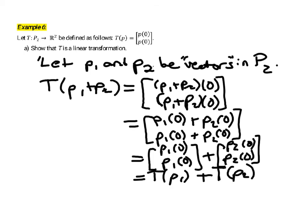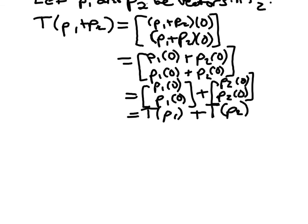So now we need to check the second condition. And that's whether T of scalar C times polynomial P1, we're hoping that this is equal to C times T of P1. That's what we're out to prove. If we can prove this, then we've shown that T is a linear transformation.